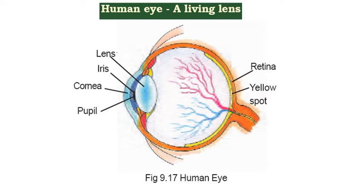First, we will describe the parts of the eye. The first part is the Convex Lens — this is the living lens. This is also called the focal lens, whose focal length is changed by the retina's distance. We cannot decrease the distance between the retina and the lens, so the focal length of the lens changes, and due to this, we can form the image of any object.